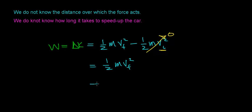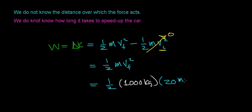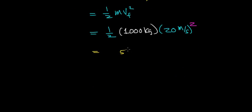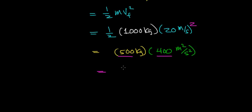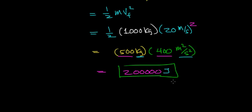This works out to be one-half of 1,000 kilograms — the mass of the car — times the final velocity squared. The car reaches a final velocity of 20 meters per second, and we square that term. One-half of 1,000 is 500 kilograms, and 20 squared is 400 meters squared per second squared. Multiplying 500 by 400 gives 200,000, and kilograms times meters squared per second squared is a unit of energy — a joule. So by using the work kinetic energy theorem, the work required to speed up this car is 200,000 joules.